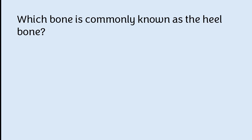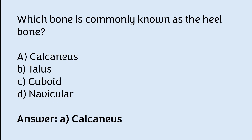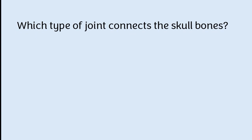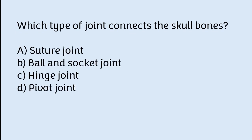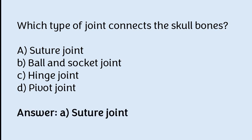Which bone is commonly known as the heel bone? Calcaneus, talus, cuboid, or navicular. Which type of joint connects the skull bones? Suture joints, ball and socket joint, hinge joint, or fibrous joint. The correct answer is option A — the suture joint is the type of joint which connects the skull bones.